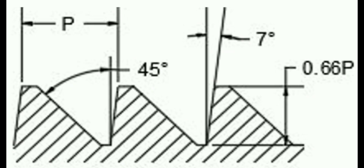Buttress threads are a type of thread profile characterized by their asymmetric shape, consisting of one side with a steep leading edge and a flank or slightly angled trailing edge.